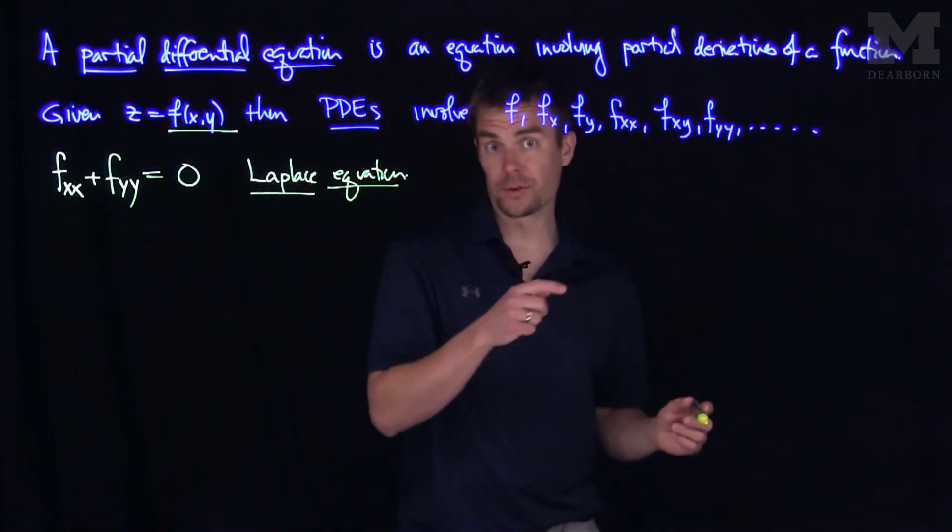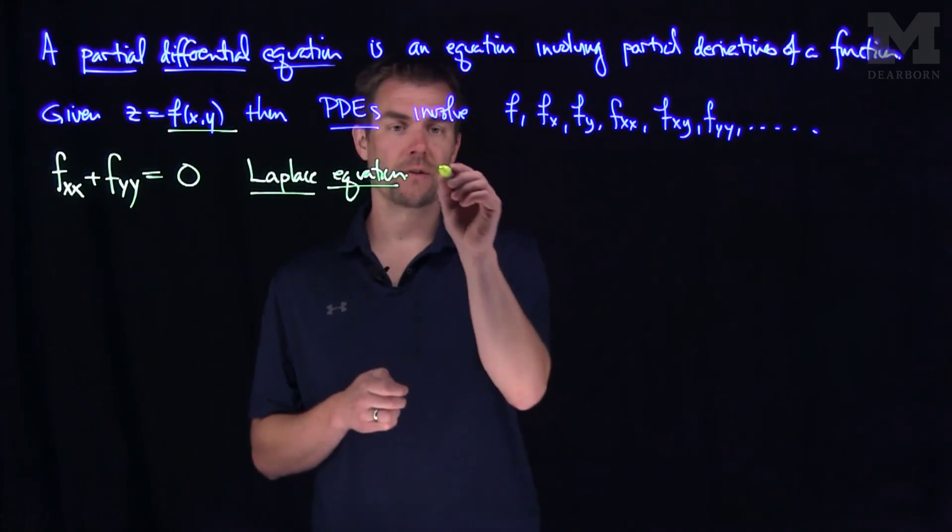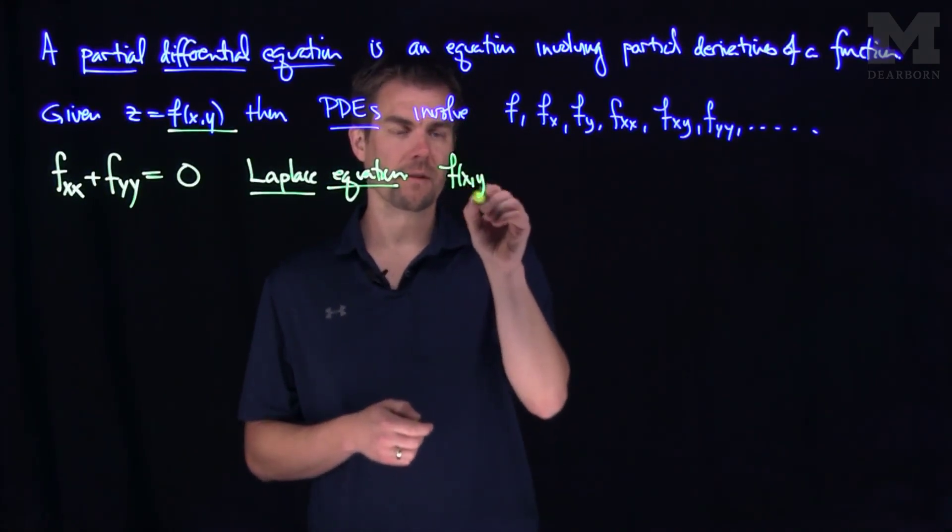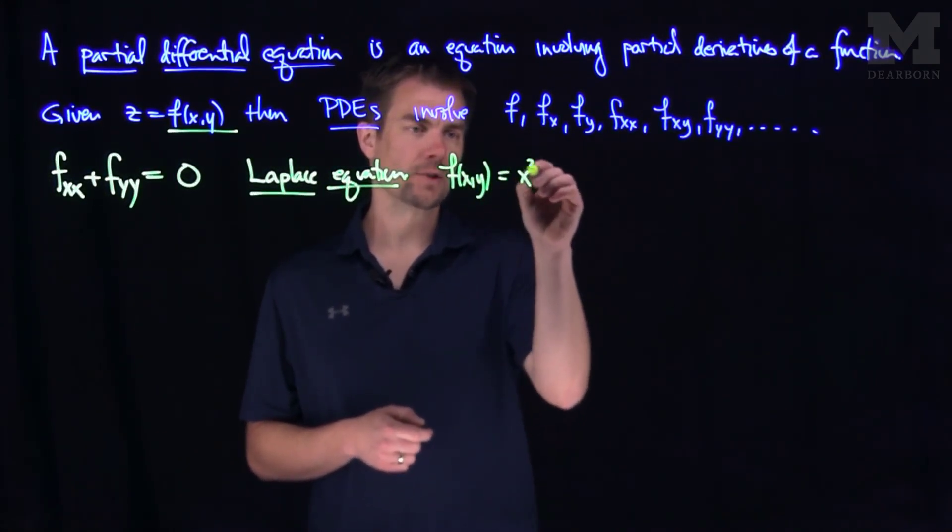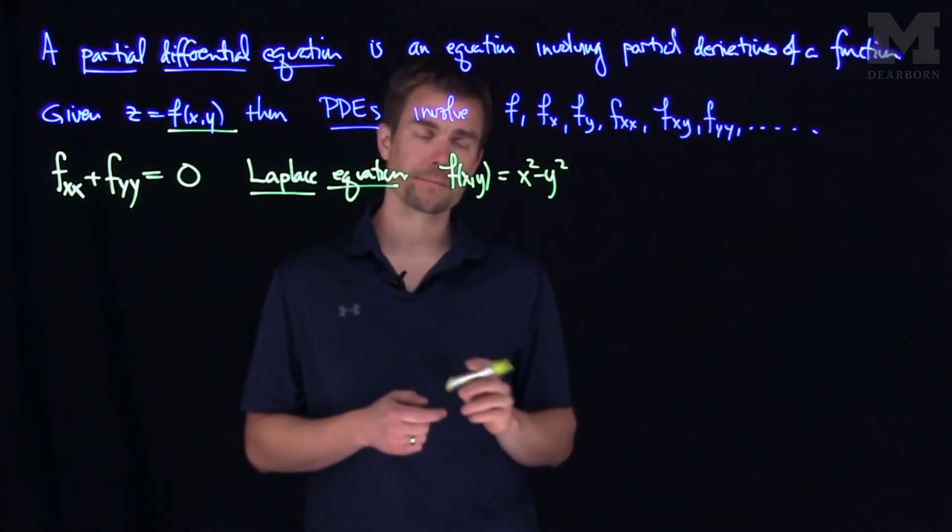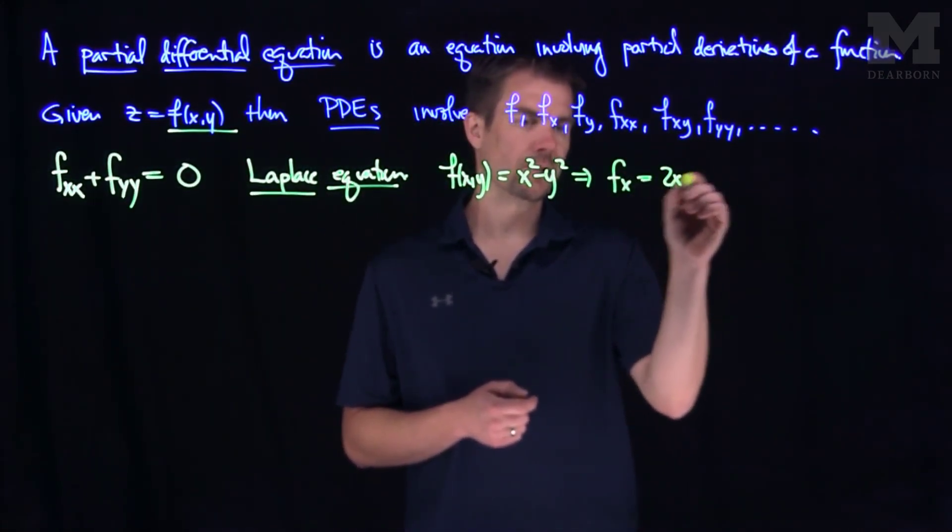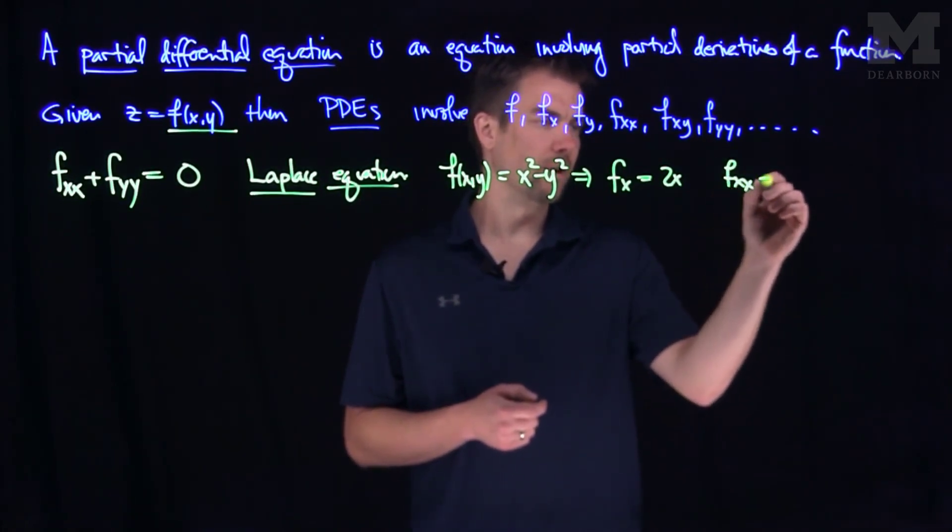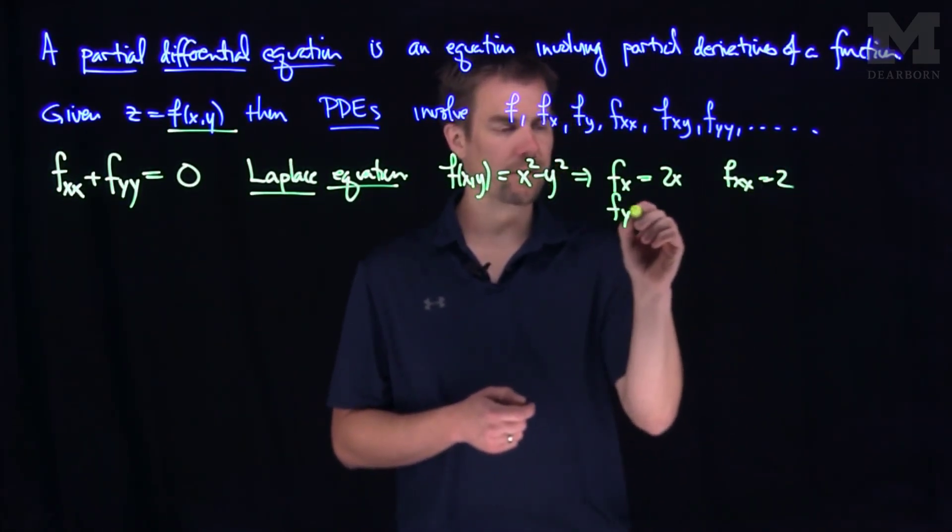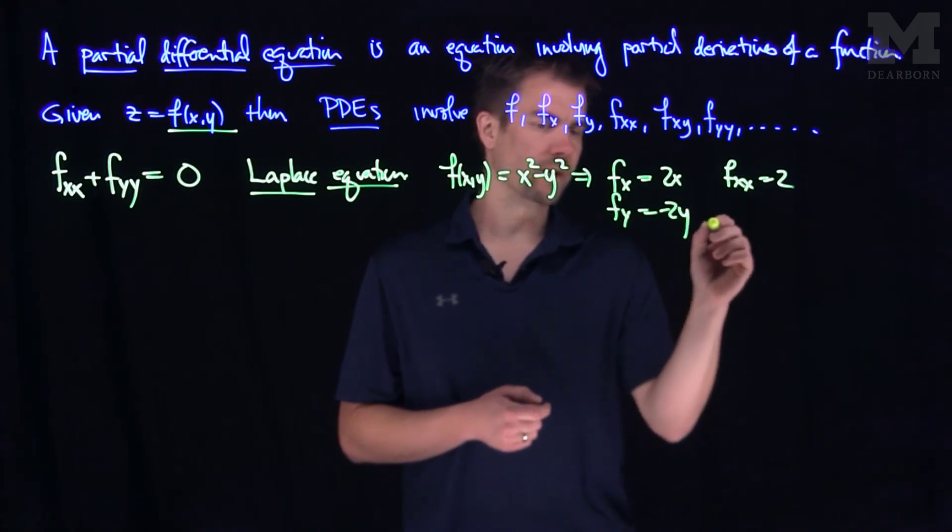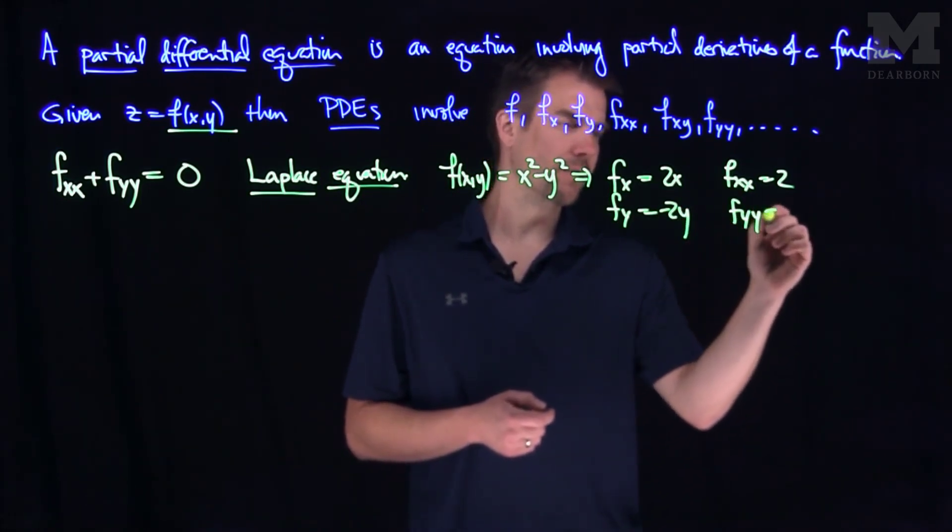We can write down the solution. There's many solutions to the Laplace equation. I'll give you one example of the infinitely many. If I look at the function x-squared minus y-squared, we can check that the x-derivative of this function is 2x, and the x-x-derivative is 2. The y-derivative is negative 2y. Then, the y-y-derivative is negative 2.